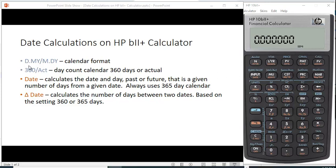The first one here is this D.M/Y slash M.D/Y. That's the calendar format. So do you want to put in the day, then a dot, then the month and year? Or do you want to put in the month, then a dot, then the day and year?